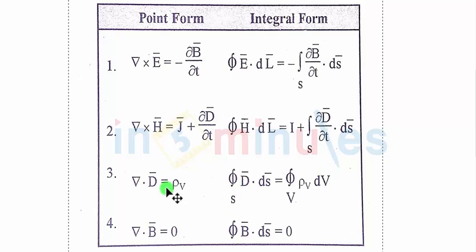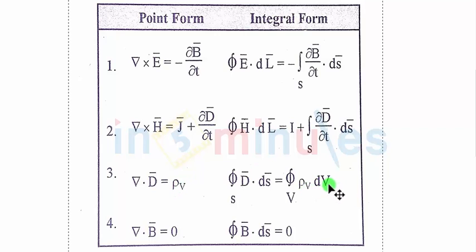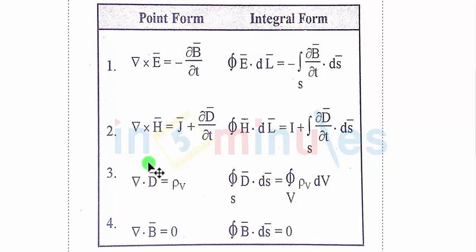Maxwell's third equation in integral form is obtained by integrating the point form on both sides. It is the surface integration of D-bar equal to the volume integration of rho-v. Maxwell's fourth equation states that when you integrate B-bar with respect to surface area over a closed surface, the value is zero. So these are the same four equations as in point form, just expressed in integral form.